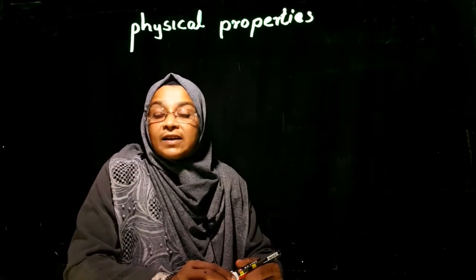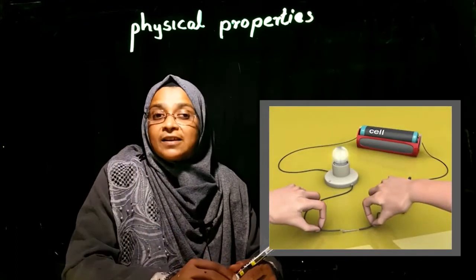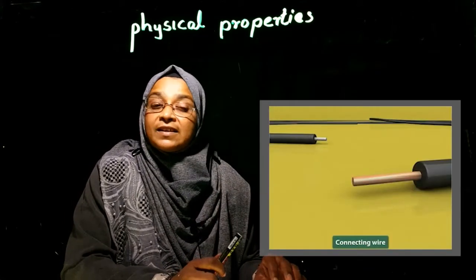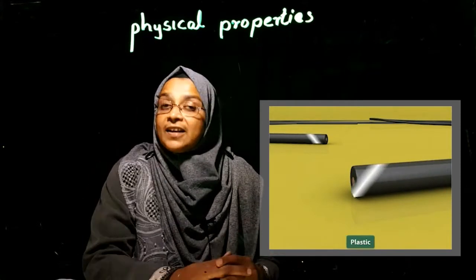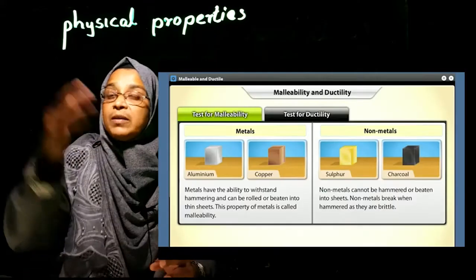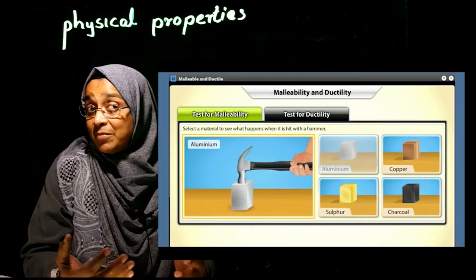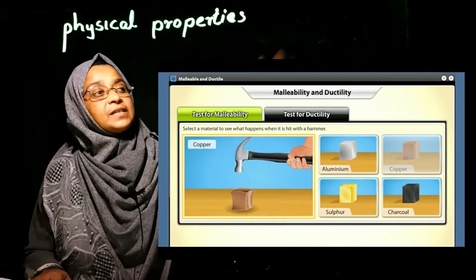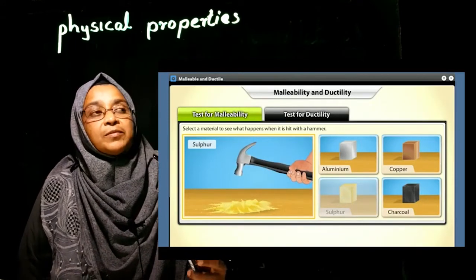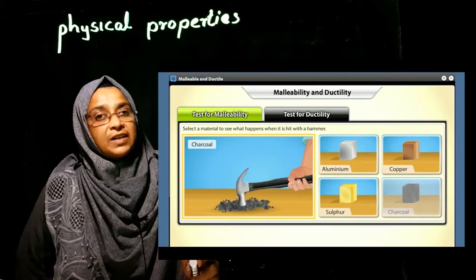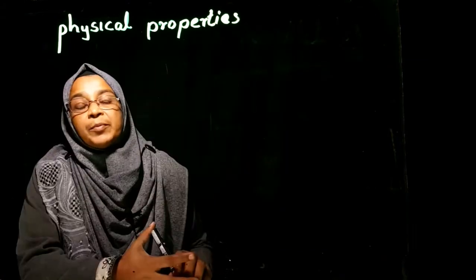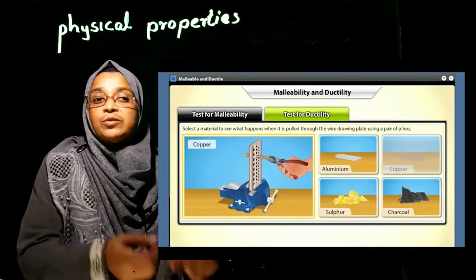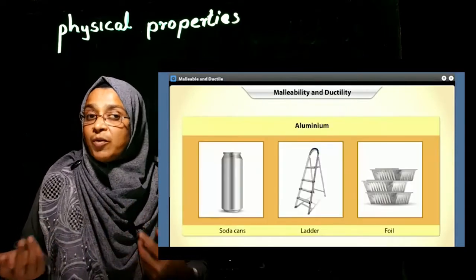All metals conduct electricity. In non-metals, except graphite, all others are electrical insulators. Next is malleability — all metals are highly malleable, meaning they can be beaten into thin sheets or plates, whereas non-metals are non-malleable. Another common property of metals is ductility, which means they can be drawn into thin wires. We often use copper wires as an example of this.